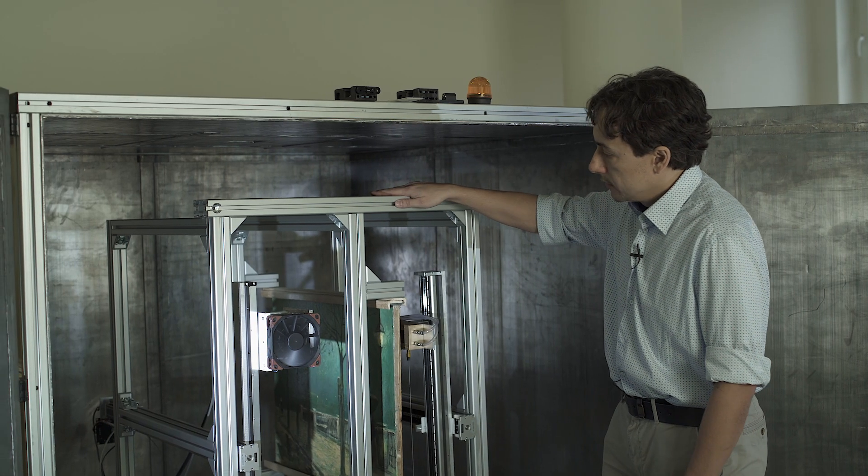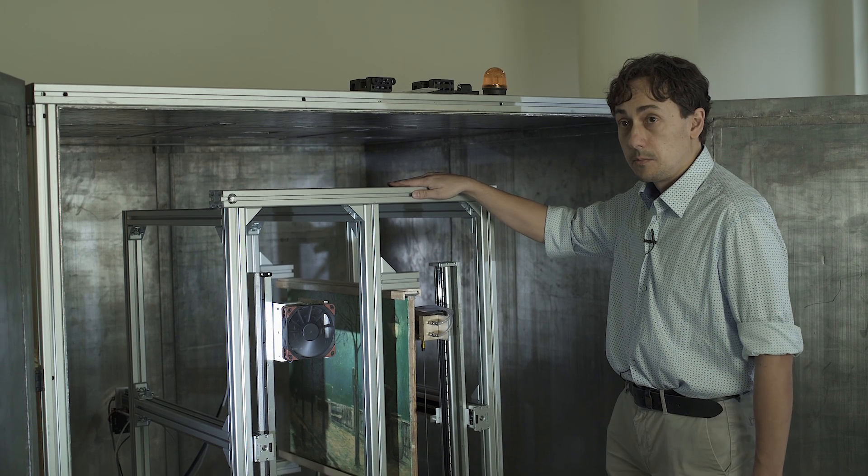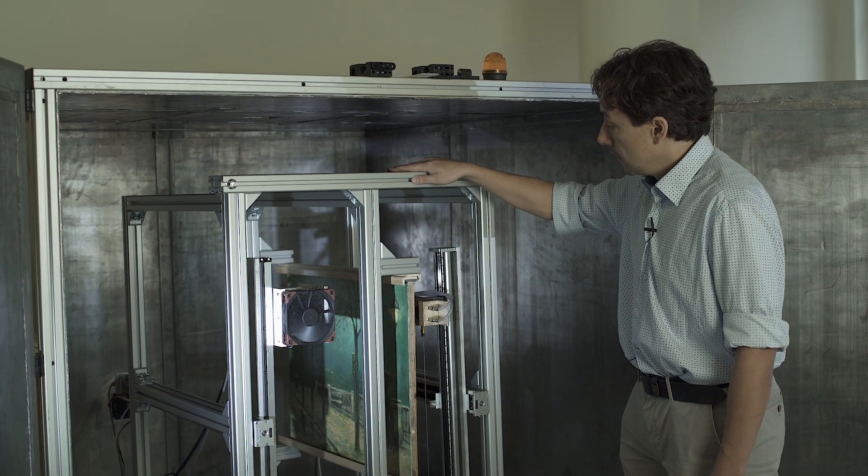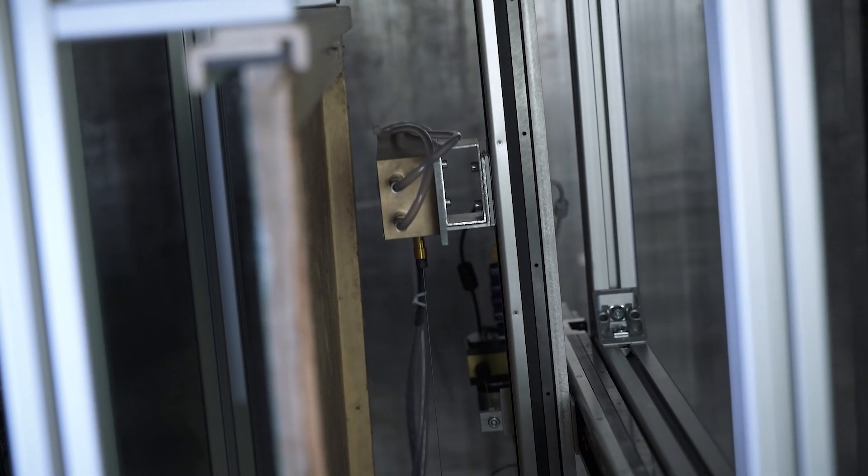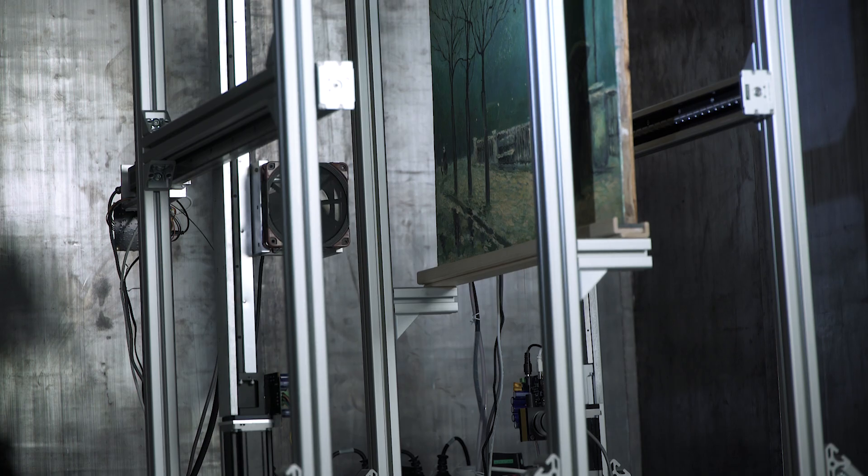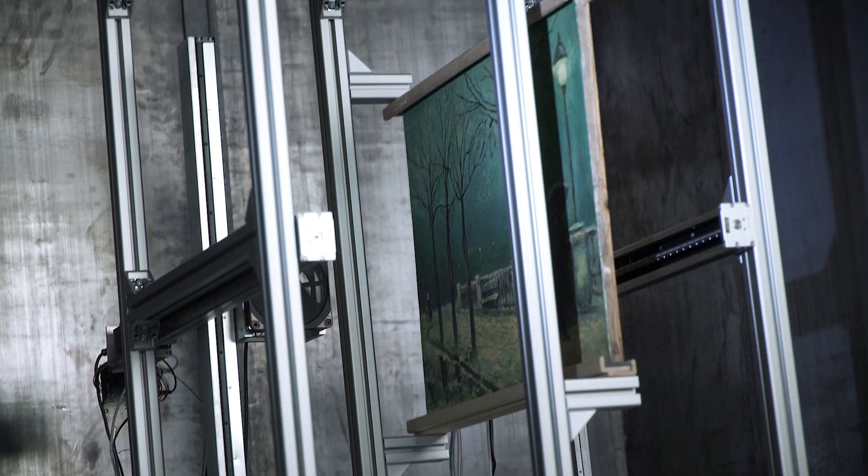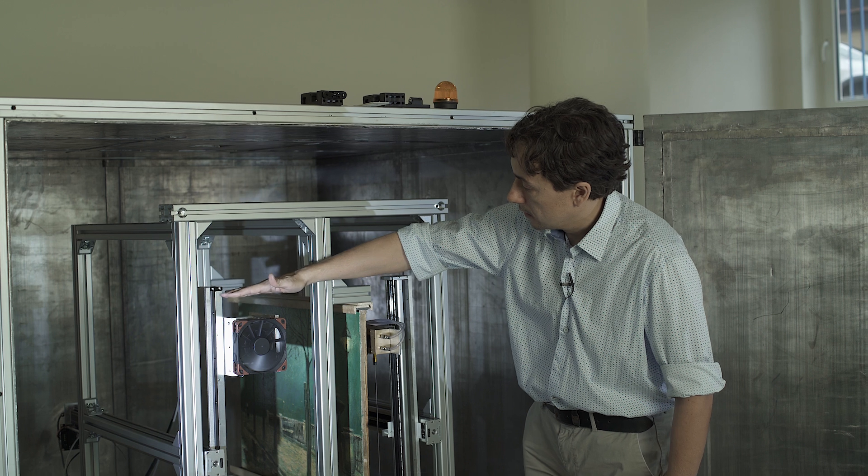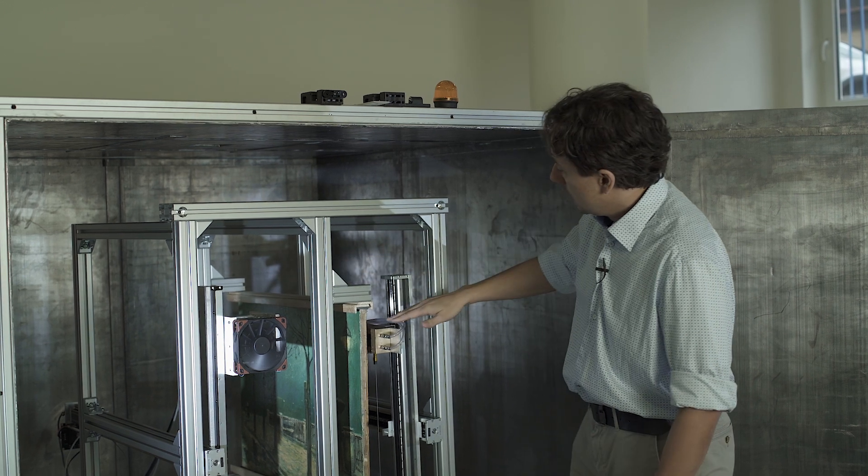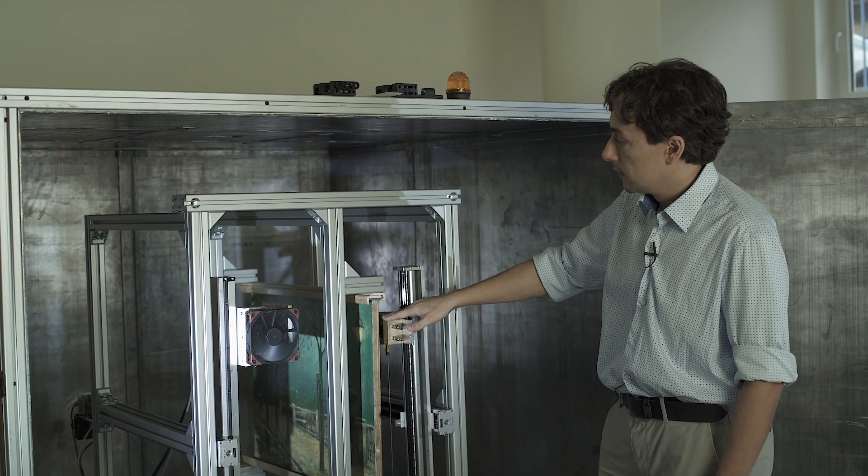This is our first x-ray imaging setup that we use for inspection of art. The basics behind the system is a standard x-ray imaging device - on this side we have an x-ray tube, on that side is an x-ray imaging detector.